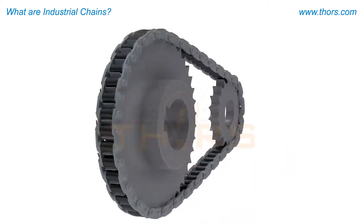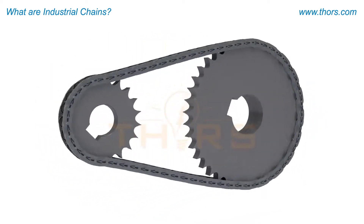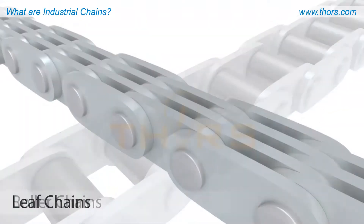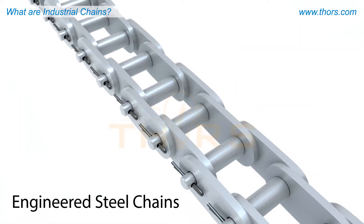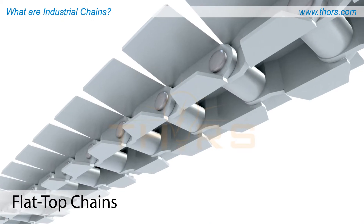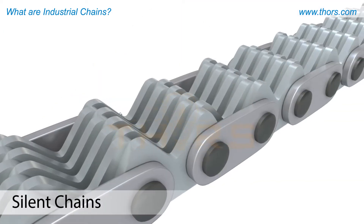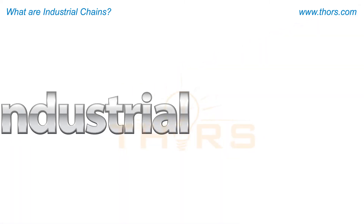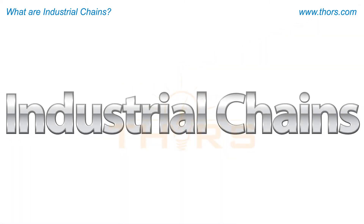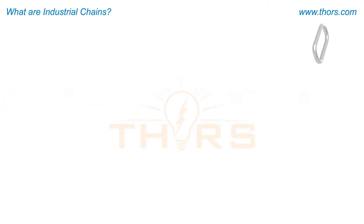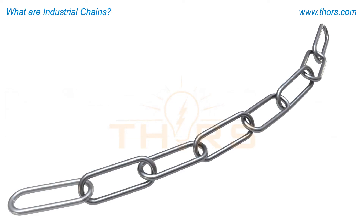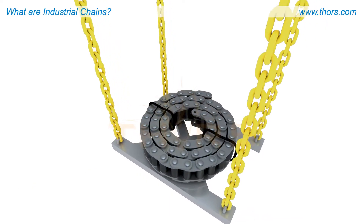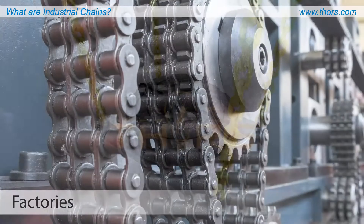There are several types of chains that are mass-produced in modern industries: roller chains, leaf chains, engineered steel chains, flat top chains, and silent chains. These will loosely be referred to as industrial chains. These types should not be confused with link chains, which are commonly used for pulling vehicles, machines, or material.